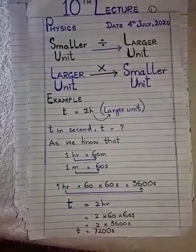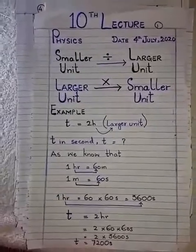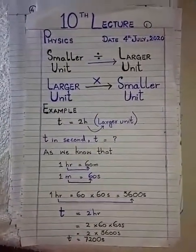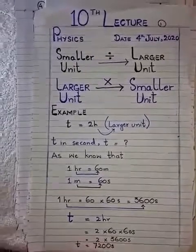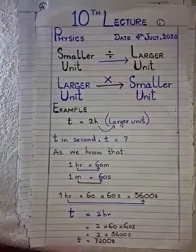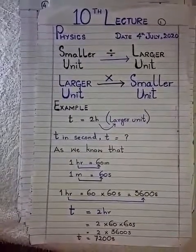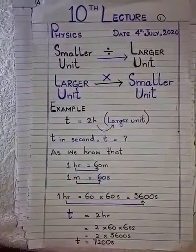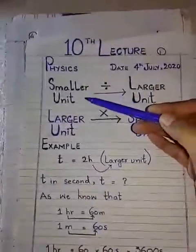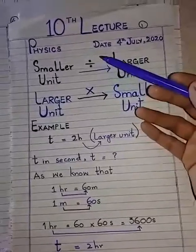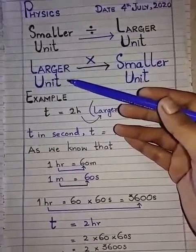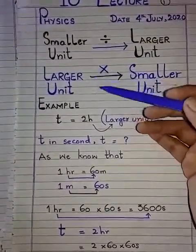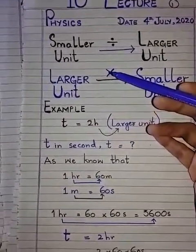Suppose we take an example of the time period of an object. Three different types of units are more commonly used: hour, minute, and second. Hour is a larger unit, minute is smaller than hour, and second is a smaller unit compared to minute. Now, if we want to convert a smaller unit into a larger unit, that value will be divided. And if we want to convert a larger unit into a smaller unit, that value will be multiplied.